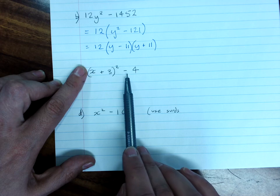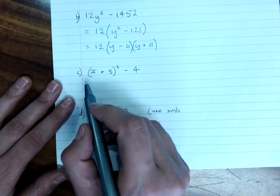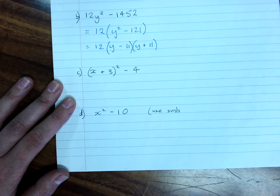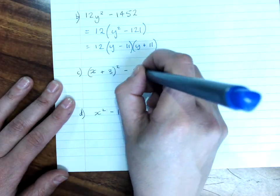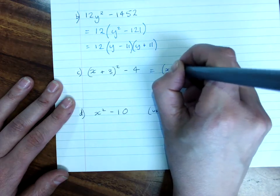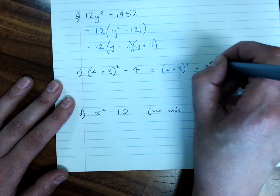This is also a difference of perfect squares. Because this is a square, difference, this is a square. So, we have, if we want to rewrite this as a square, x plus 3 squared minus 2 squared.